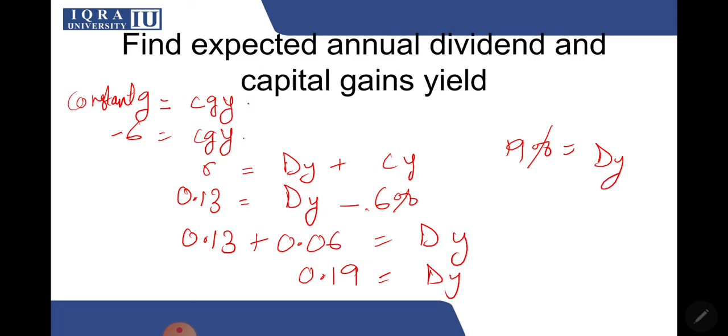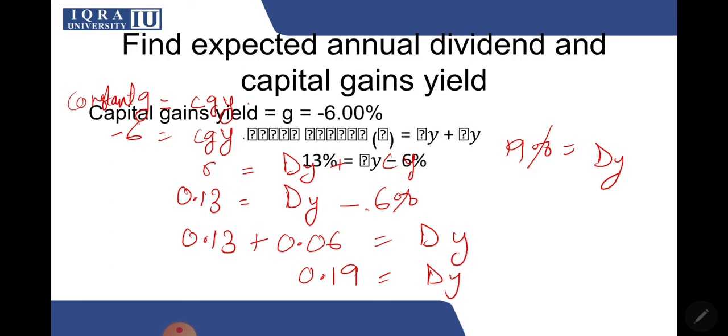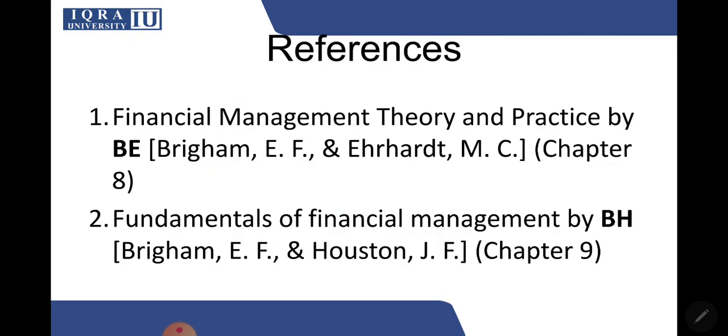Since the stock is experiencing constant growth, dividend yield and capital gain yields are constant. Dividend yield is sufficiently large, which is 19%, to offset the negative capital gains. And with this our topic ends and these are the references.